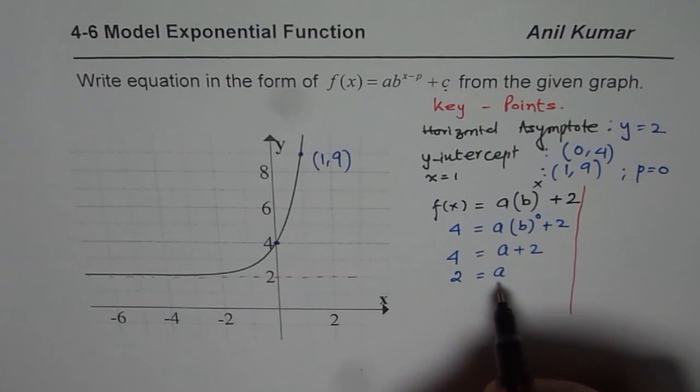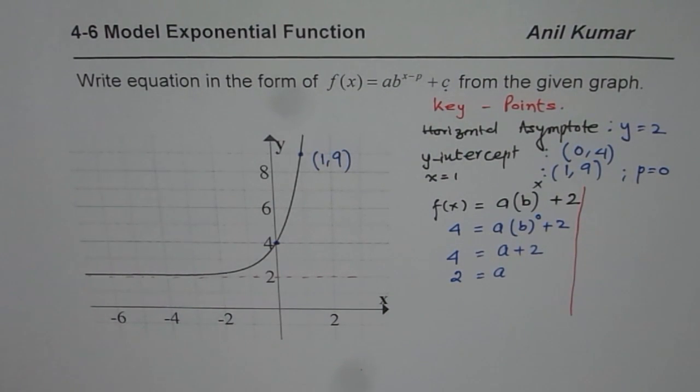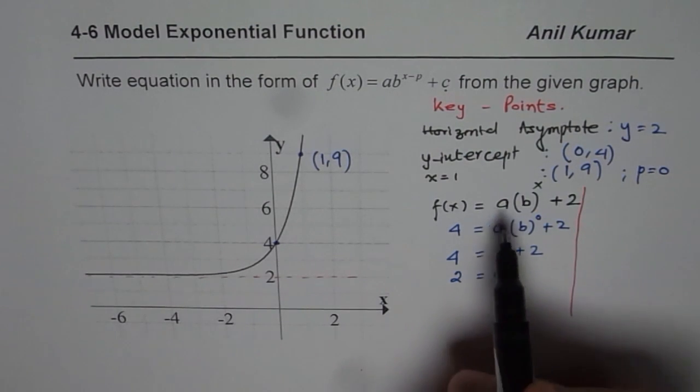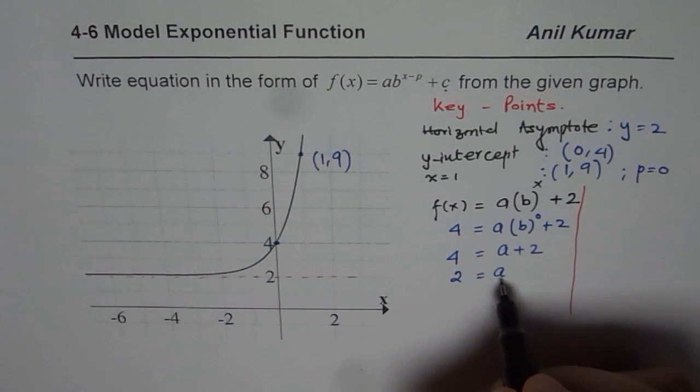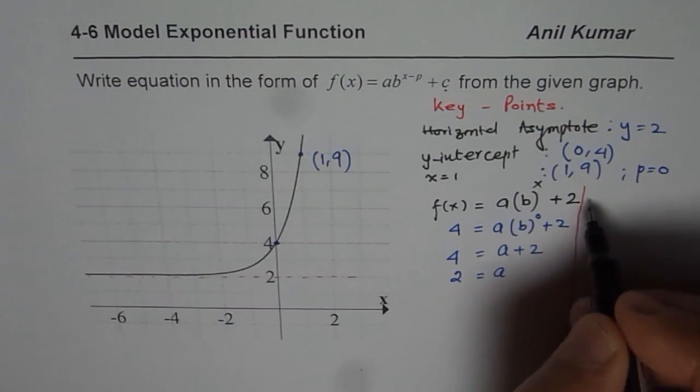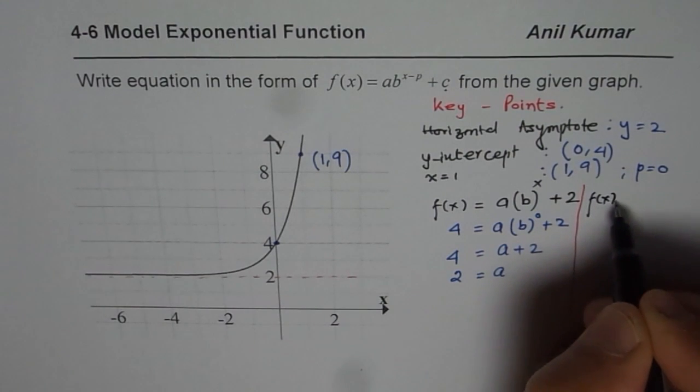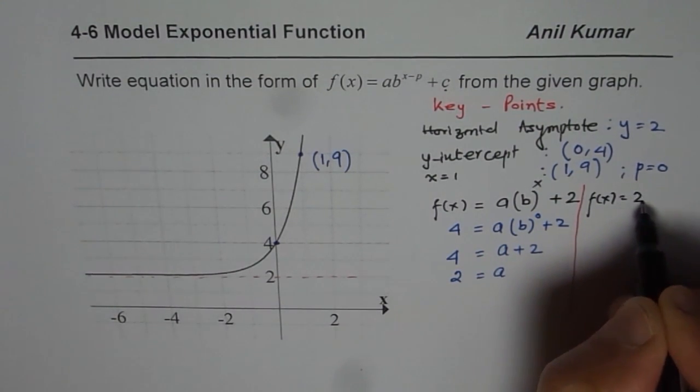Now since we know 2 as our base, we can now substitute this in our equation and find base b. So the vertical stretch is 2. So we have now the equation as a = 2. So we will write 2 here.